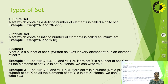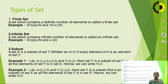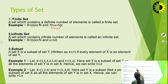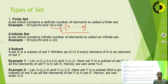Now come to the types of sets. The first type is a finite set — a set which contains a definite number of elements. For example, the set of English vowels {A, E, I, O, U} is finite with 5 elements. Another example is the set S = {x | 50 < x < 70}, which contains elements 51 to 69 — a definite number of elements.